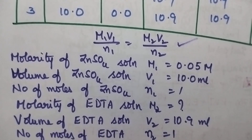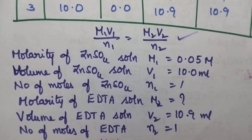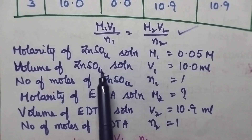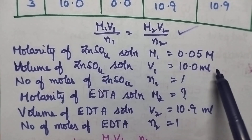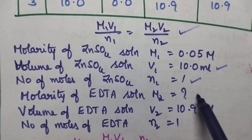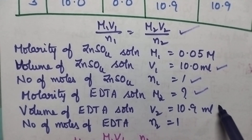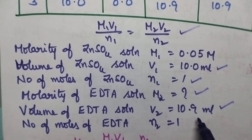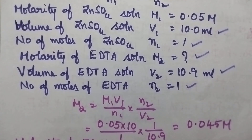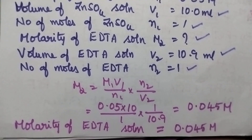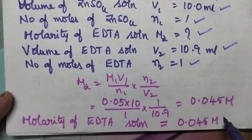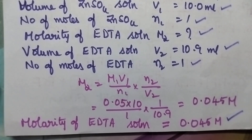The formula used is M1V1/N1 = M2V2/N2. Molarity of zinc sulfate solution M1 = 0.05 M; volume of zinc sulfate solution V1 = 10 ml; number of moles of zinc sulfate N1 = 1; molarity of EDTA solution M2 is to be found; volume of EDTA solution V2 = 10.9 ml; number of moles of EDTA N2 = 1. Using the formula M2 = (M1V1/N1) × (N2/V2), on substituting, the molarity of the EDTA solution is obtained as 0.045 M.